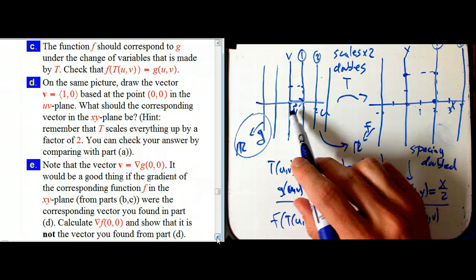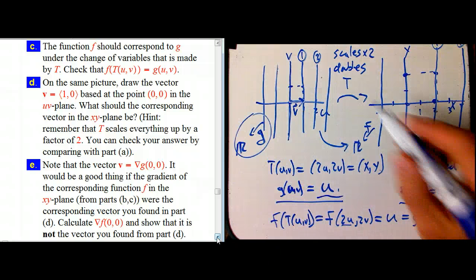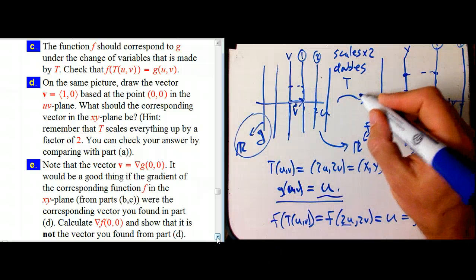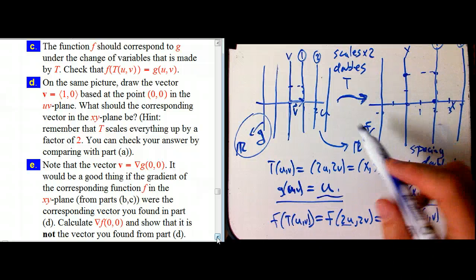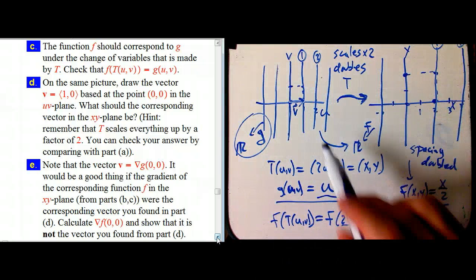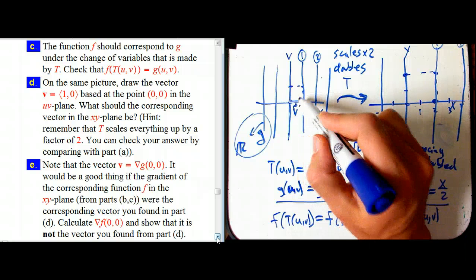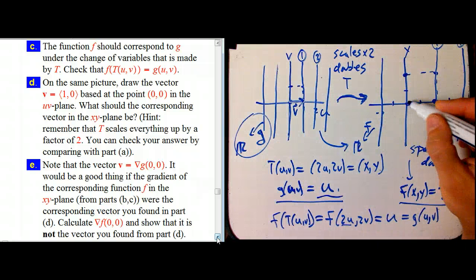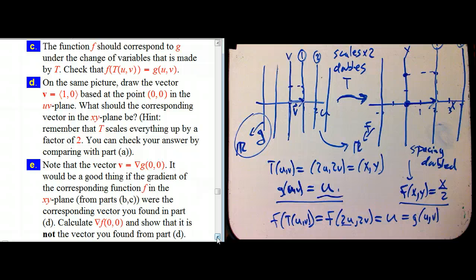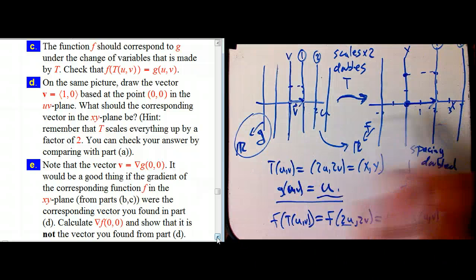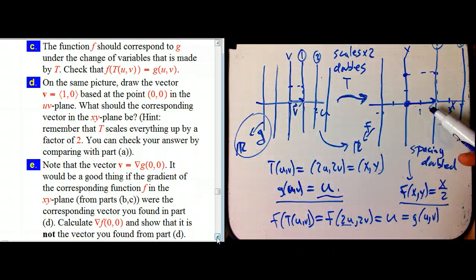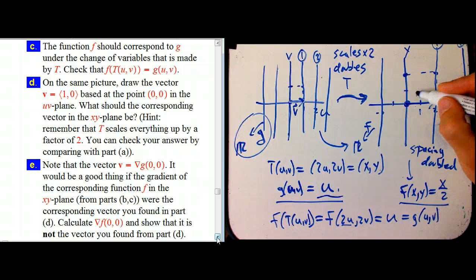What should the corresponding vector be? Well, we haven't talked a lot about pushing forward vectors through transformations explicitly, although we really have done it implicitly with things like velocity curves and things like that. But there's a simple way. This is the arrow from 0, 0 to 1, 0. It should transform to this arrow. And does that make sense? Well, yeah. This is the doubling map. It just takes this arrow and it scales everything by 2.